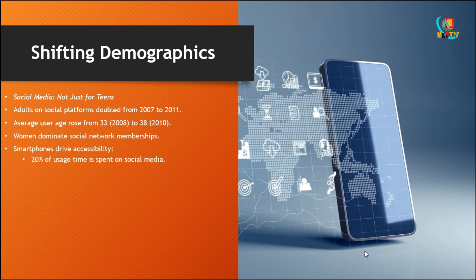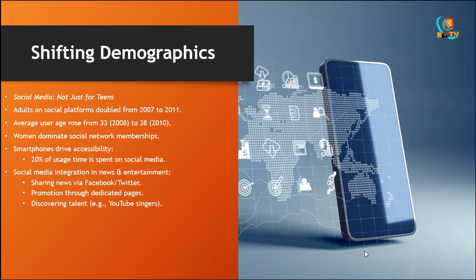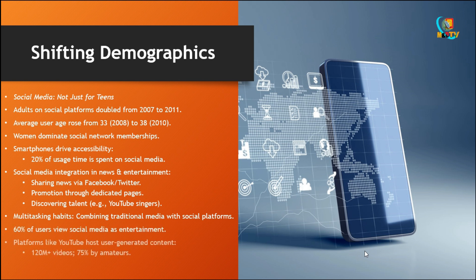Social media's role in news gathering: social media drives instant reporting, as seen during the Haiti and Japan earthquakes with real-time updates and videos. Its impact on journalism has been a shift from top-down broadcasting to crowdsourced narratives, with blogs challenging accuracy and fostering accountability.